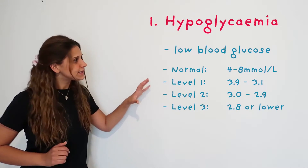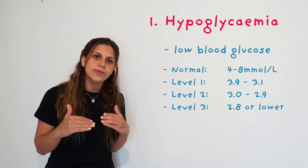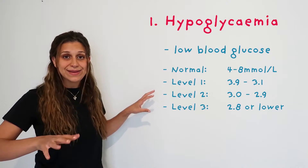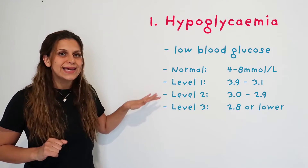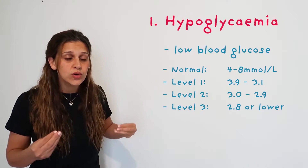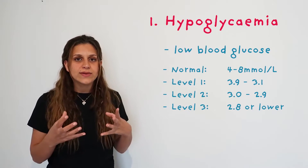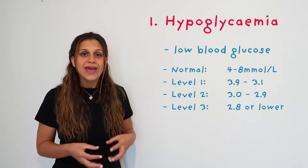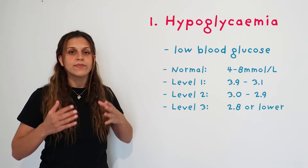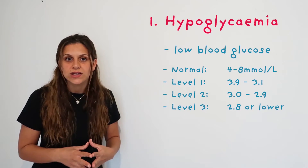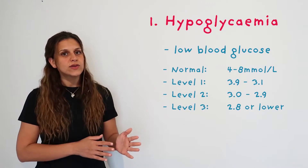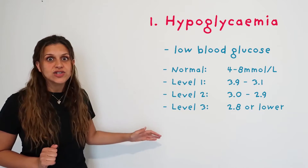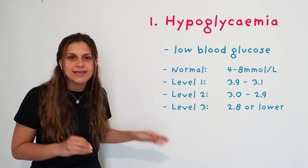Level 2 hypoglycemia is between 3.0 to 2.8 millimoles per liter, and this is where you should be worried — your patient might lose consciousness any minute. Take immediate action. If your patient is still talking to you and can eat, give them a sugary drink to get the blood glucose up. If they cannot drink, call the medical team and start a glucose infusion, anywhere between 5% to 10% should be good.